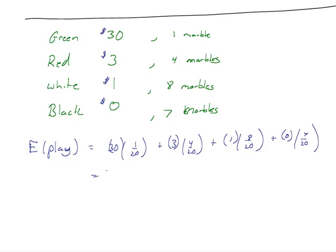So when I calculate this, again the denominators are all the same, so I'm going to have everything divided by 20. 30 times 1, 3 times 4, 8 times 1, and then 7 times 0. Add this up and we have 8 plus 12 is 20, so we have 50 over 20, which is 2.5.